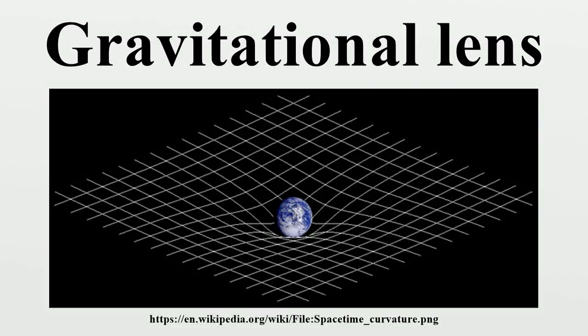A gravitational lens refers to a distribution of matter between a distant source and an observer that is capable of bending the light from the source as it travels towards the observer. This effect is known as gravitational lensing and the amount of bending is one of the predictions of Albert Einstein's general theory of relativity.